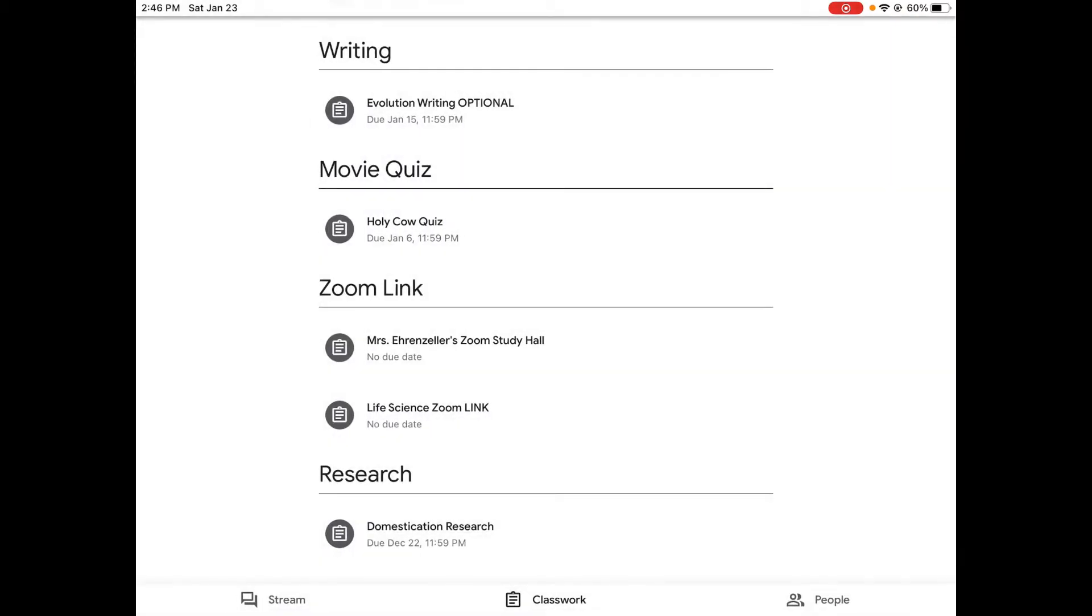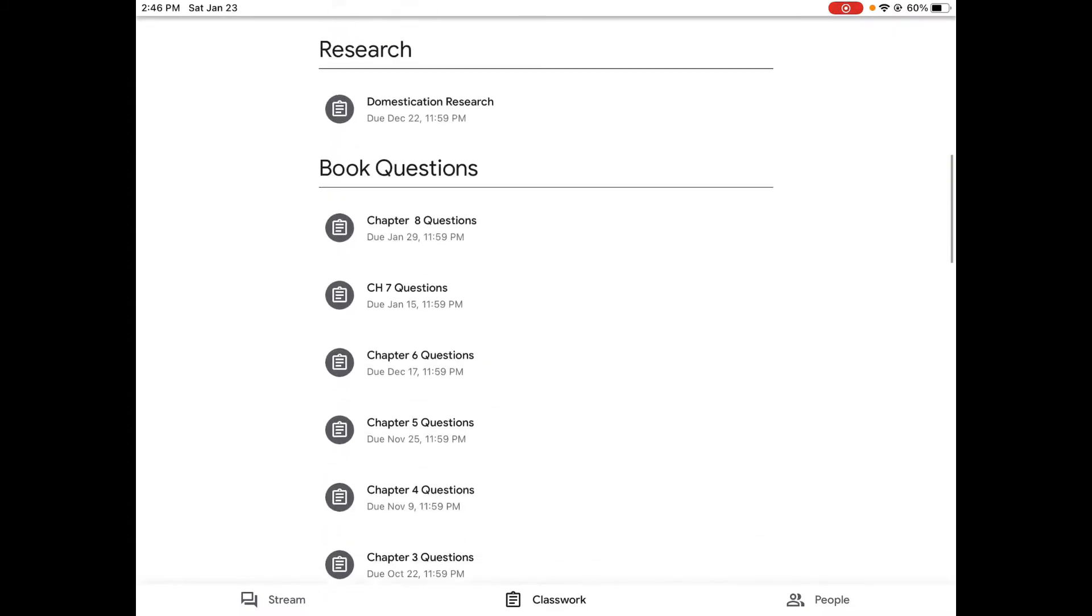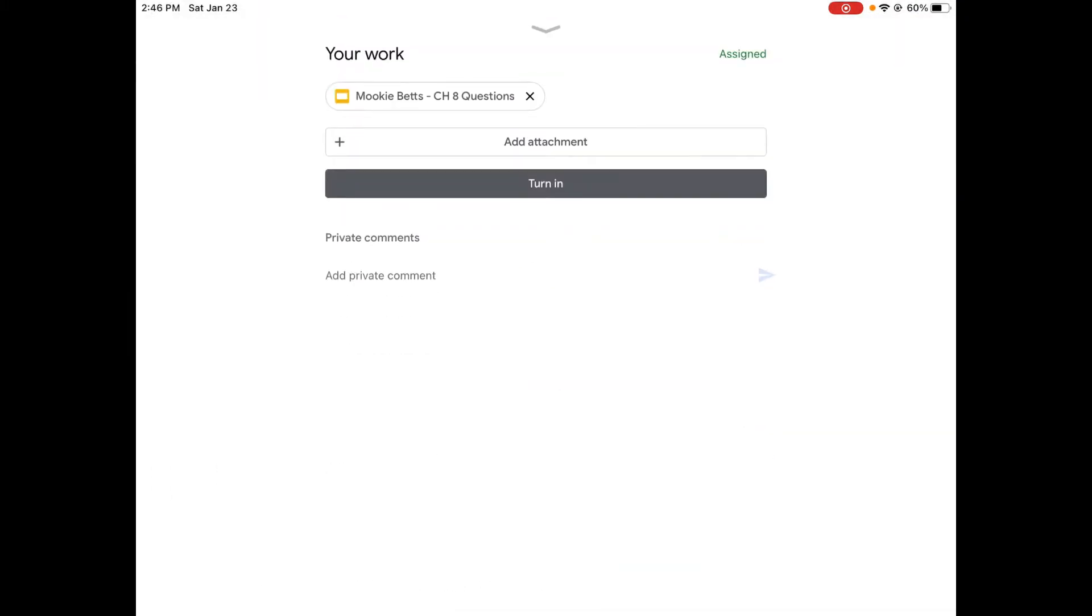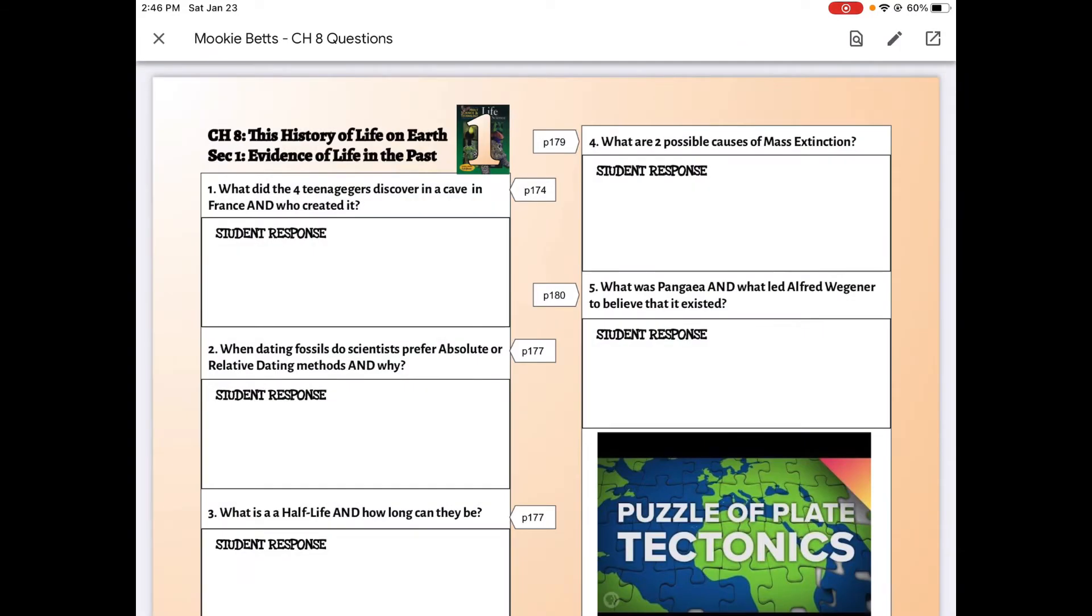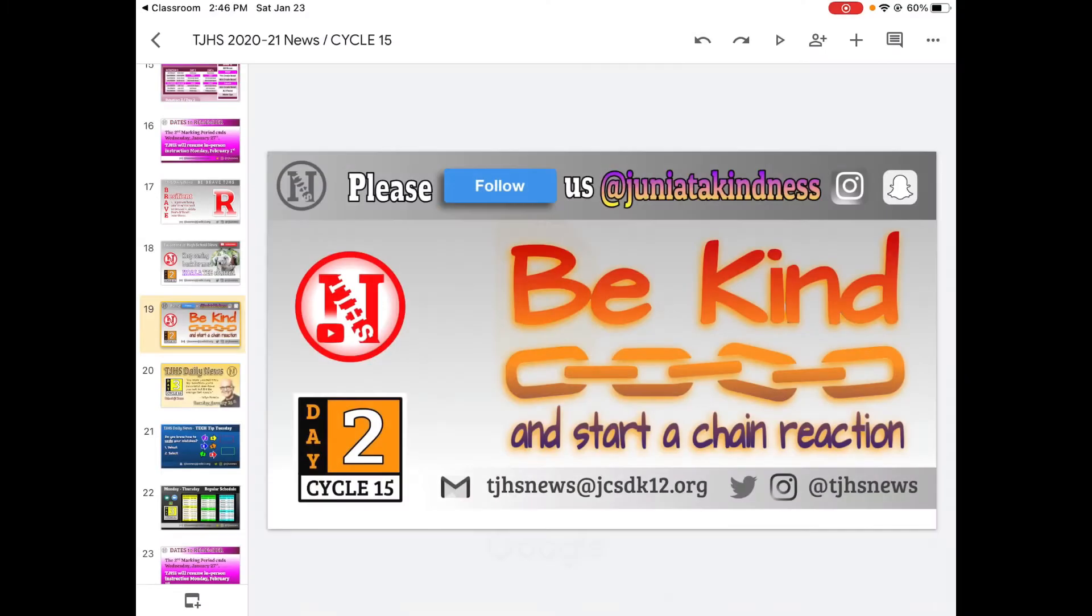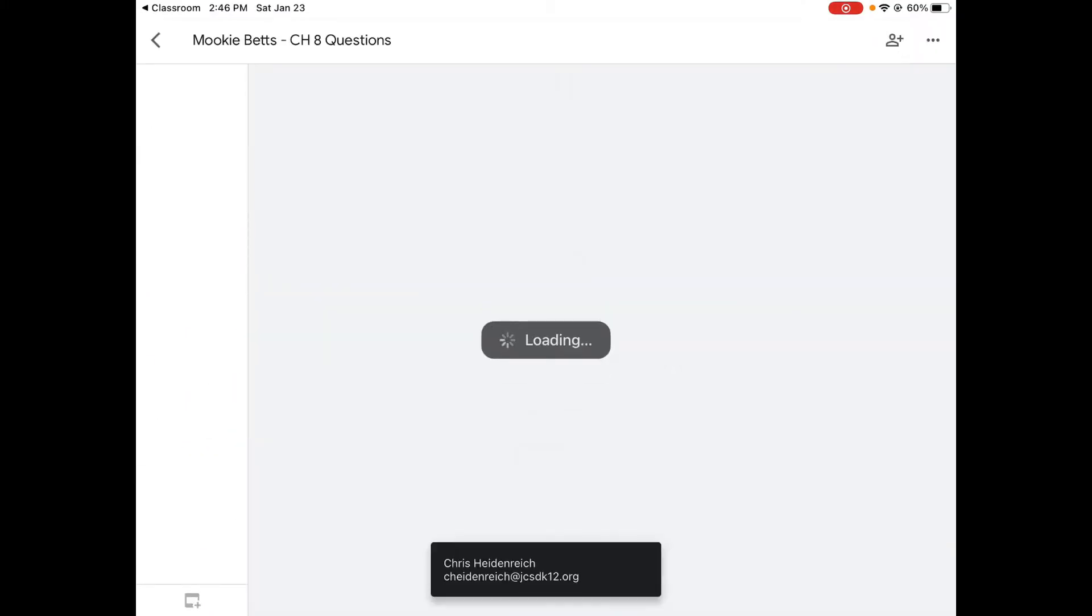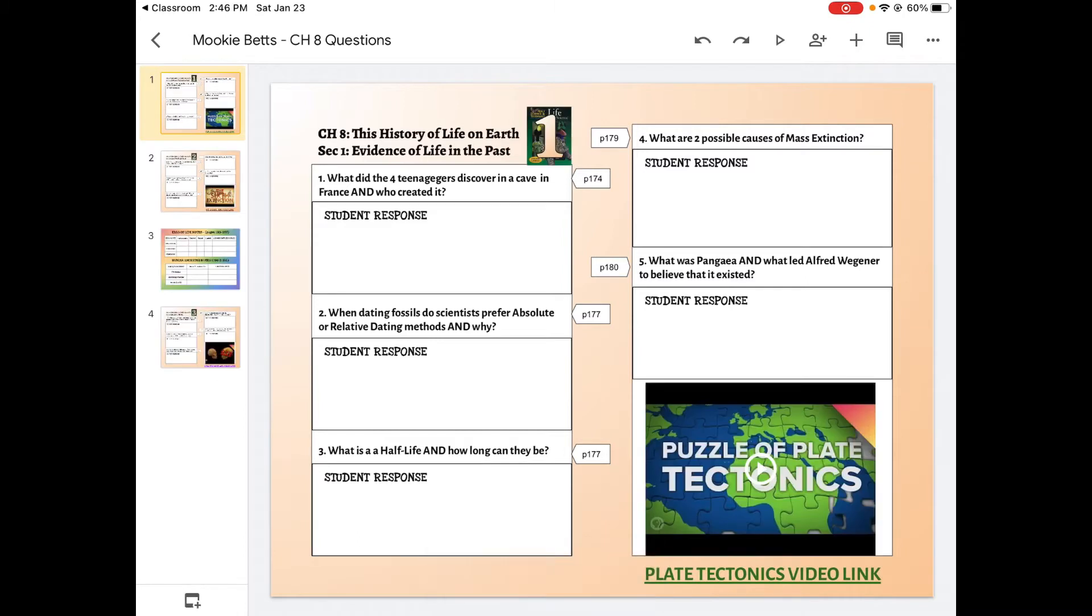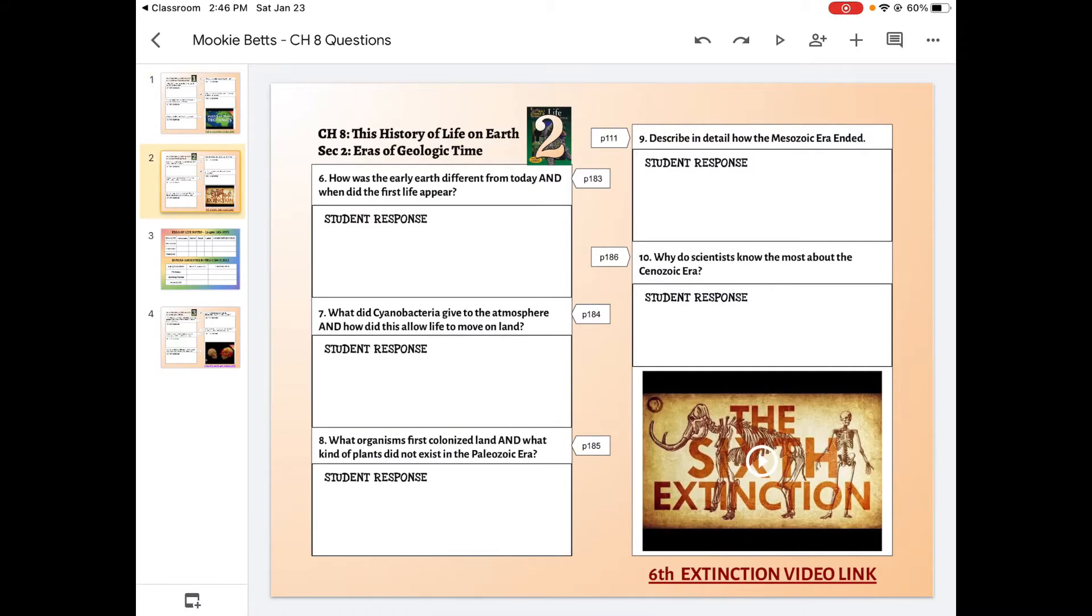We're working on Chapter 8's book questions. We want to push the up arrow and open up our slides. We want to hit the arrow in the upper right-hand corner, and that'll open up our slides. We should be on Slide 2 today, and there is a page typo there.